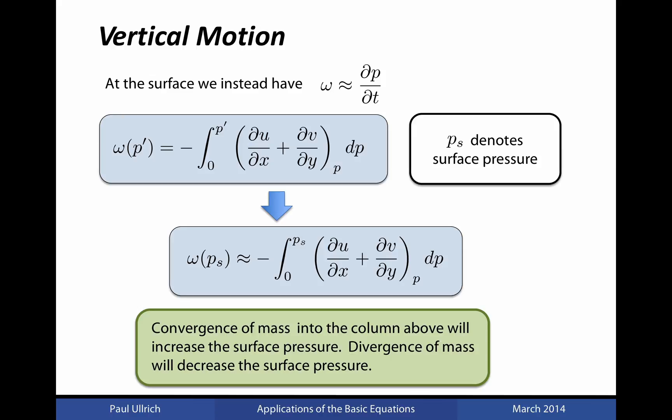Effectively, what this means is that convergence of mass into the column will increase the surface pressure. This makes sense from the basic principle of conservation of mass. If mass moves into our atmospheric column, then the total amount of mass within that column must increase, and consequently the pressure felt at the surface, which is proportional to the amount of mass above you, must increase.